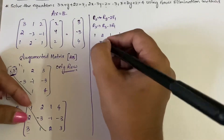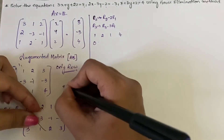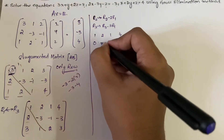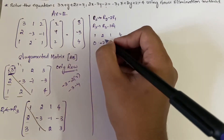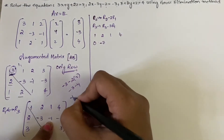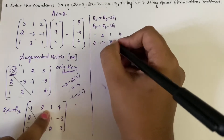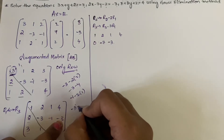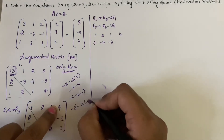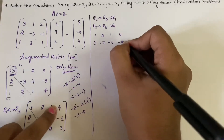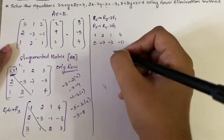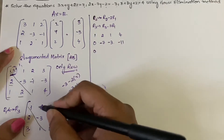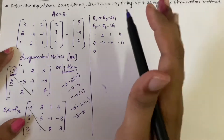Continuing R2 = R2 - 2R1: next element -3 minus 2×2 = -3 - 4 = -7; next -1 minus 2×1 = -3; next -3 minus 2×4 = -11. So R2 = [0, -7, -3 | -11]. For R3 = R3 - 3R1: 3 - 3×1 = 0; 1 - 3×2 = 1 - 6 = -5.